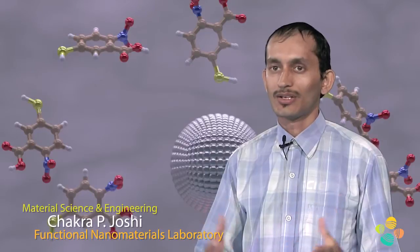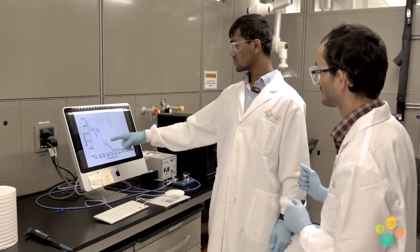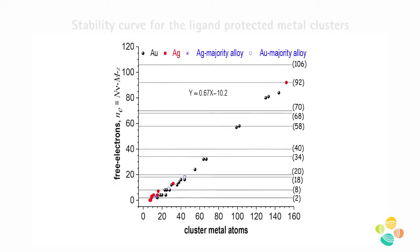Silver clusters can be taken into different solvents via ligand exchange but the question is how ligand chooses a particular size. This question is difficult to answer. However, we have proposed a stability curve that would help us what size of clusters would be probable with these ligands.